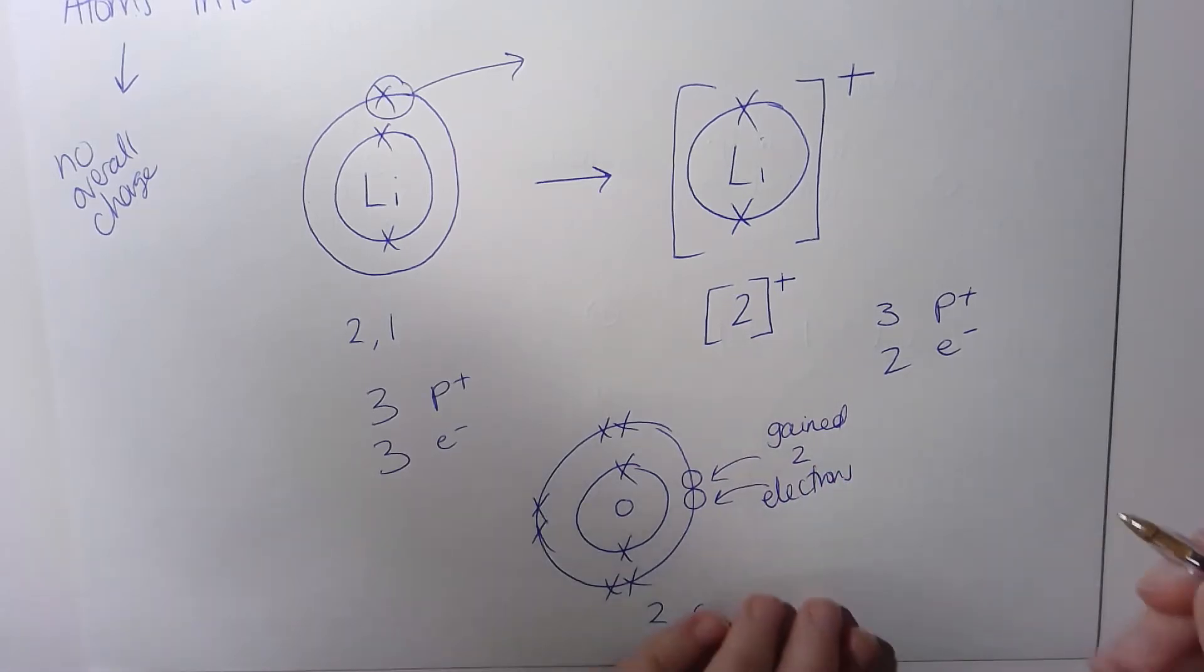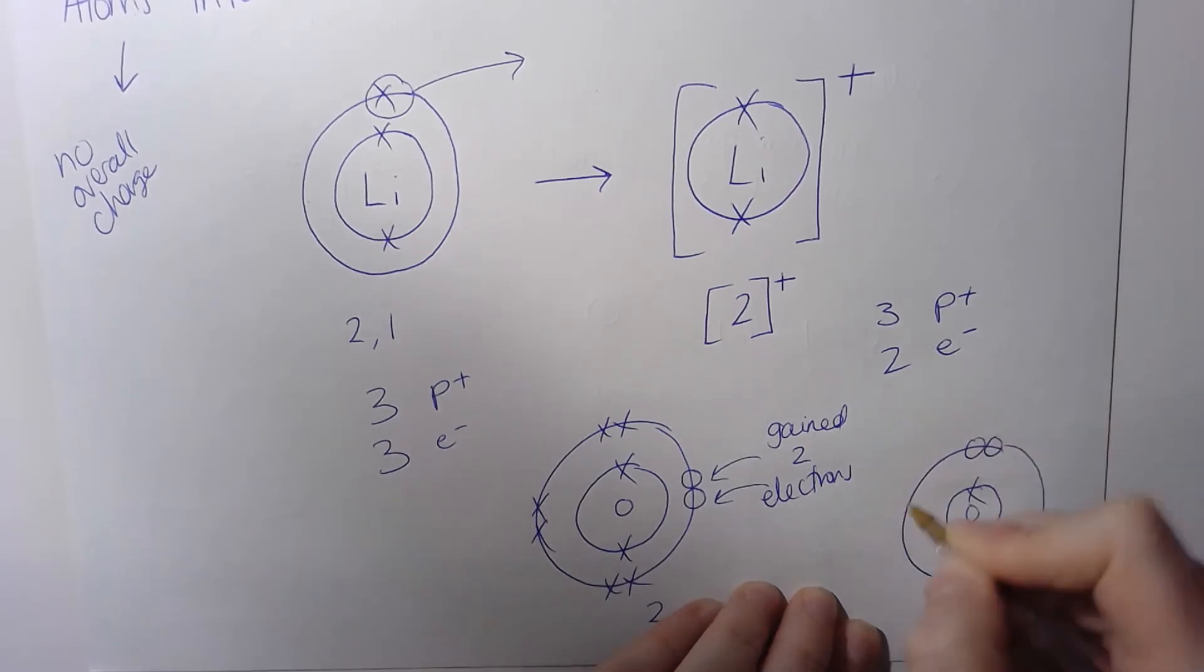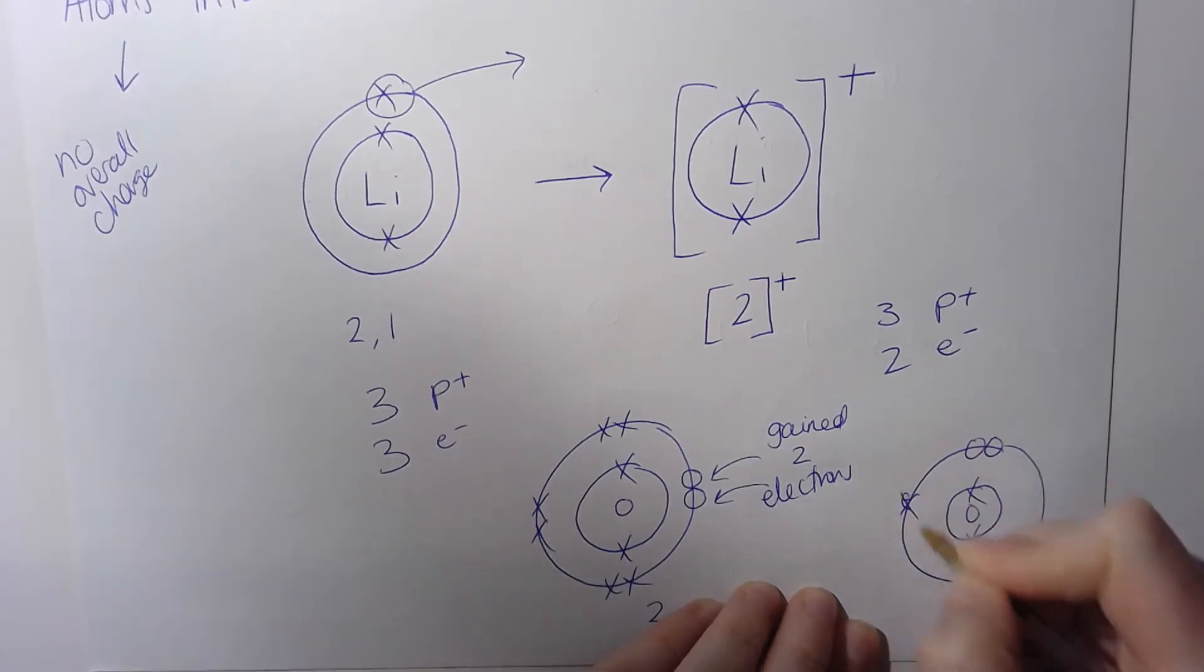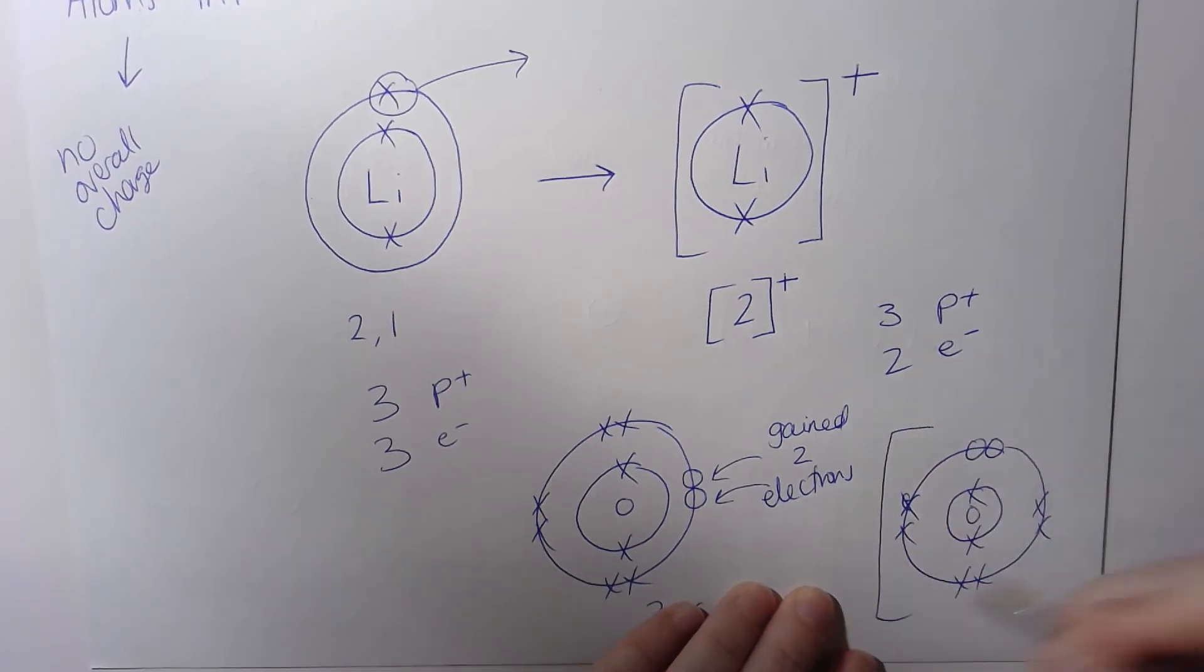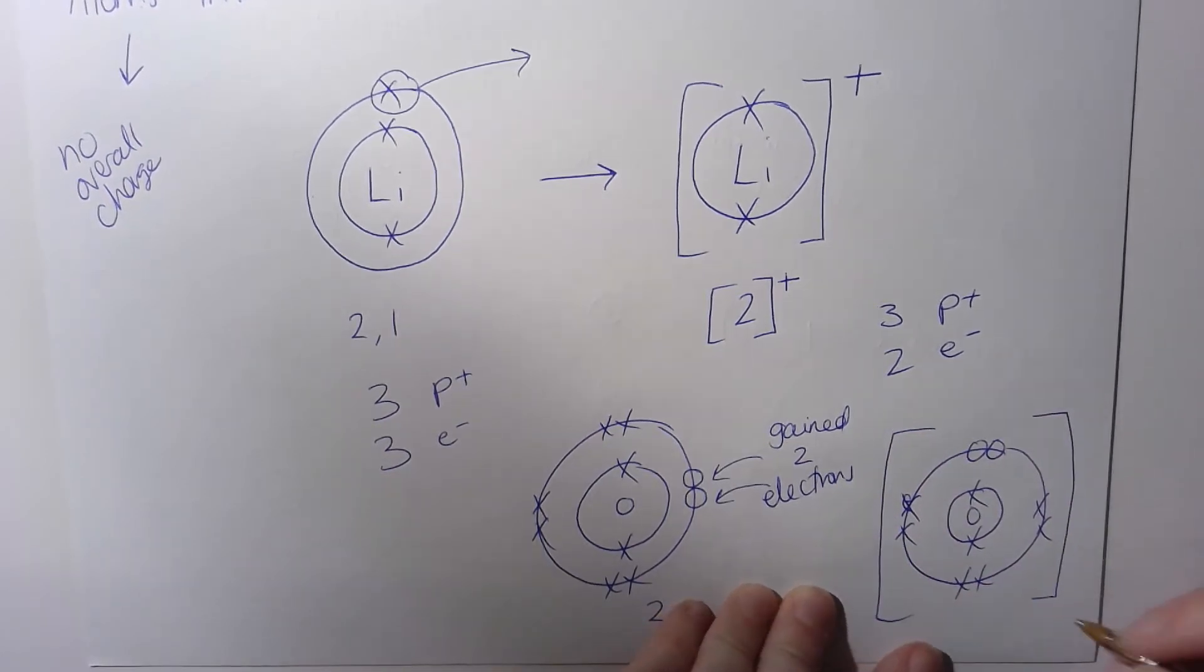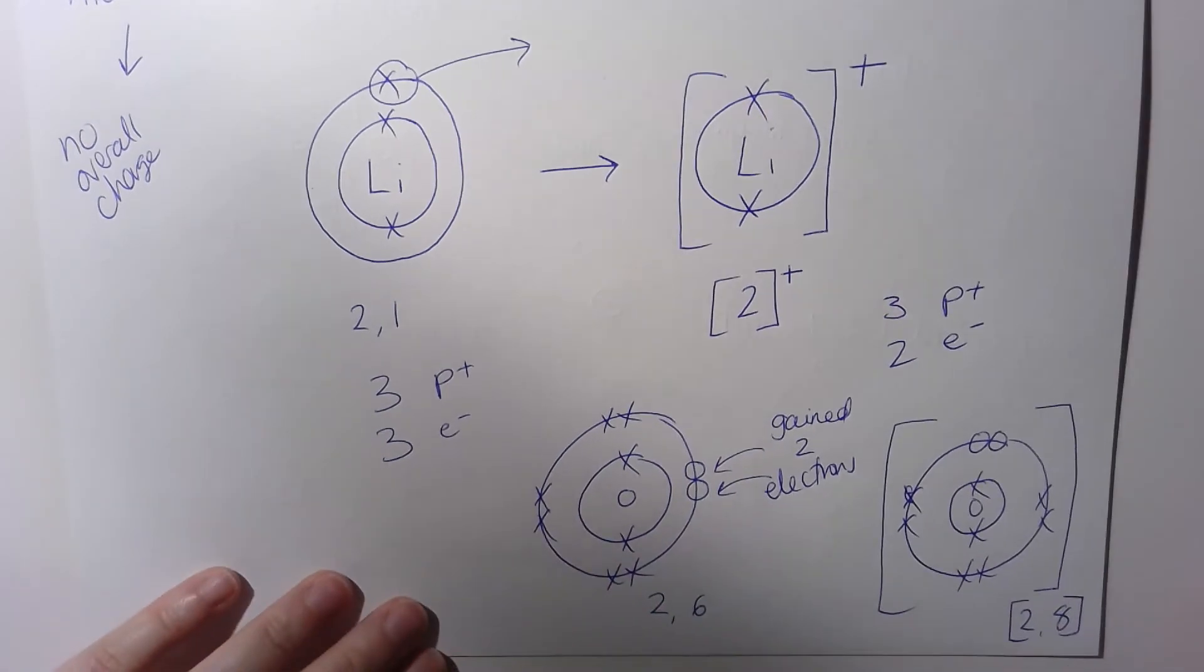Its structure now has changed. We now have a full shell on our outer electron shell. Our square brackets to show that it's now become an ion, and now we need to work out its charge.